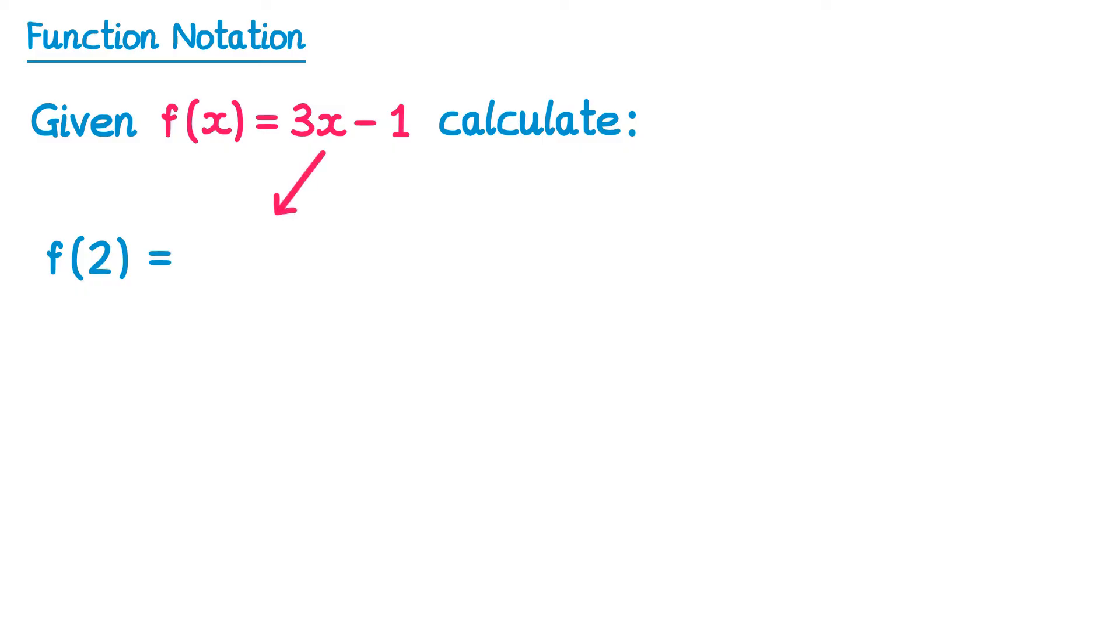So not 3x minus 1, but 3 bracket minus 1. Inside the bracket we then just put the input. The input was 2, so we'll place a 2 inside the bracket. So it's 3 times 2 which is 6 and then minus 1. 6 minus 1 is 5.